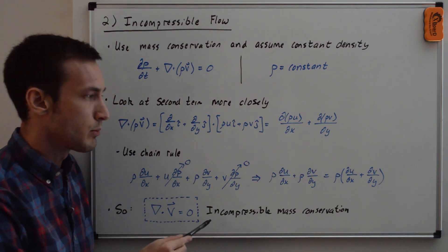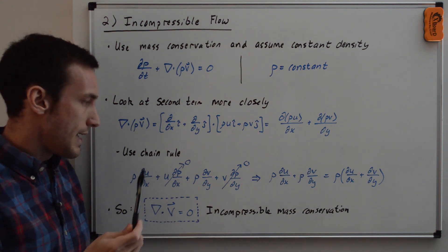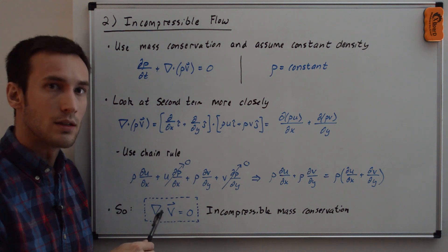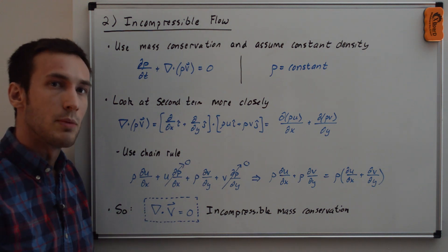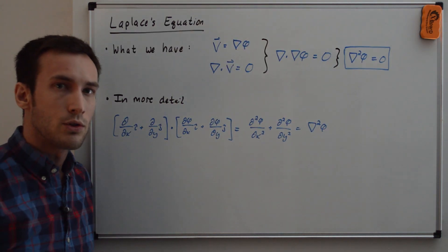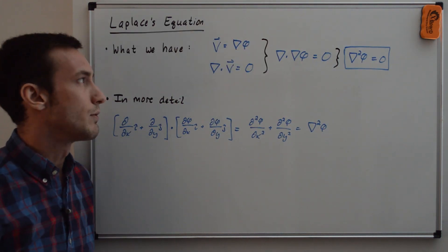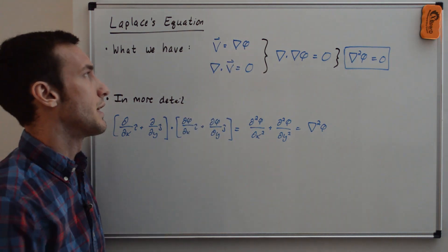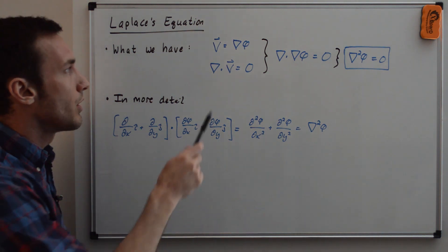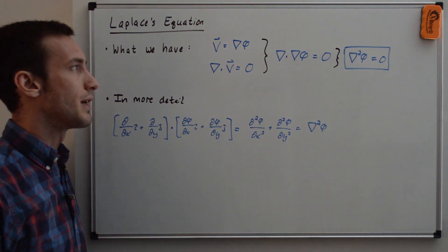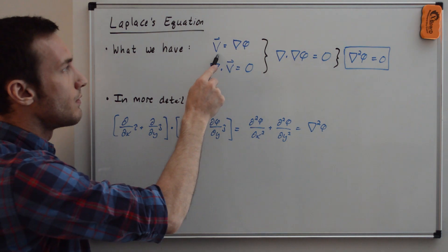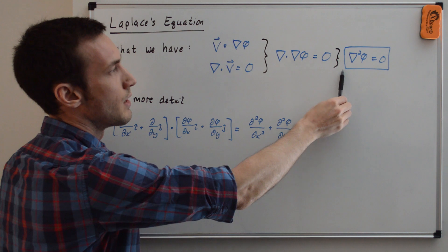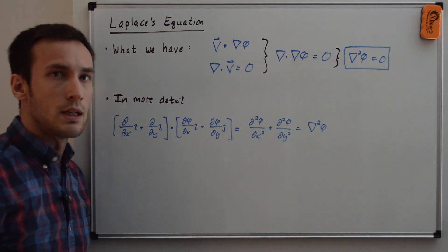We're not done yet because this equation is in terms of velocities, and we want to solve for the scalar velocity potential phi. Taking our two key results — v equals del phi, and del dot v equals zero — we plug in v to get del dot del phi equals zero, which results in the famous Laplace's equation: del squared phi equals zero.